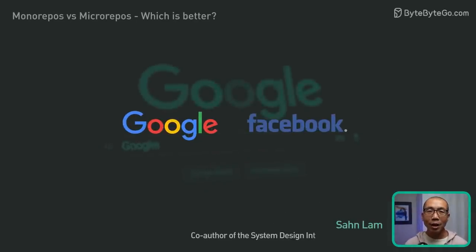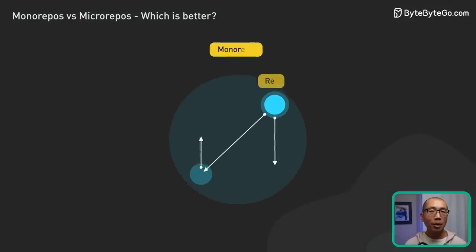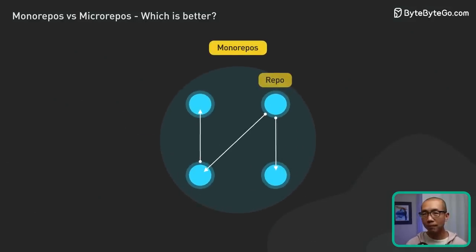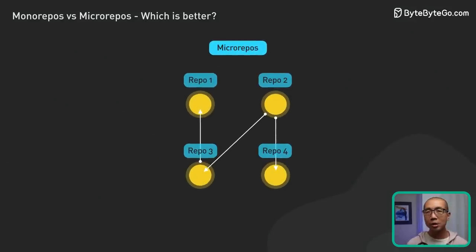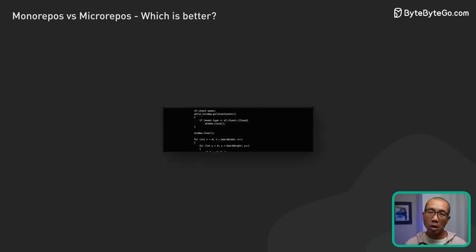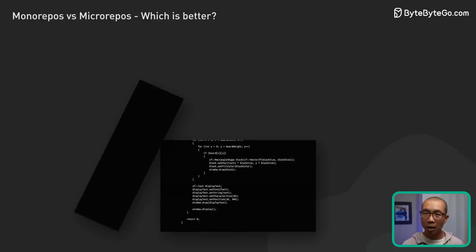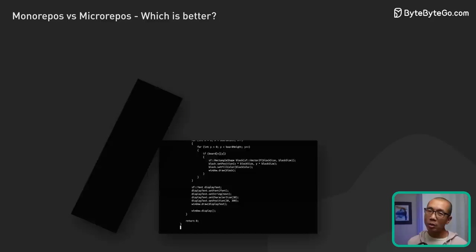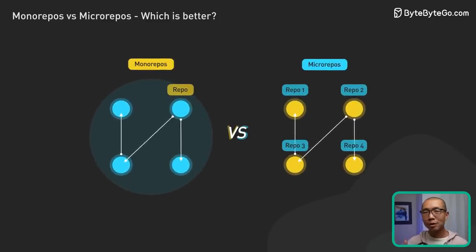Hey there! Have you ever wondered how major tech giants like Google and Facebook manage to keep their mountains of code in check? Or perhaps you're deciding how best to structure your own project's code. The way we manage our code can make or break the team's productivity and product stability. That's why today we're diving into the great debate: monorepos versus micro-repos.